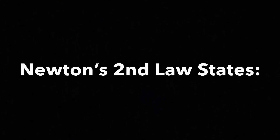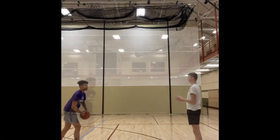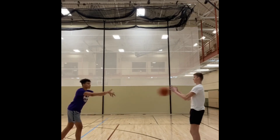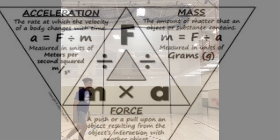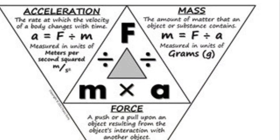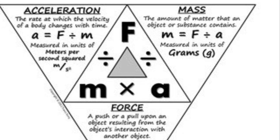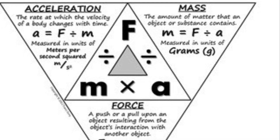The second law essentially states that force equals mass times acceleration. If I threw a 10 pound medicine ball to Keaton, I would have to apply more force because the mass is greater. If I applied double the force, the object will double its acceleration, which is a direct relationship.